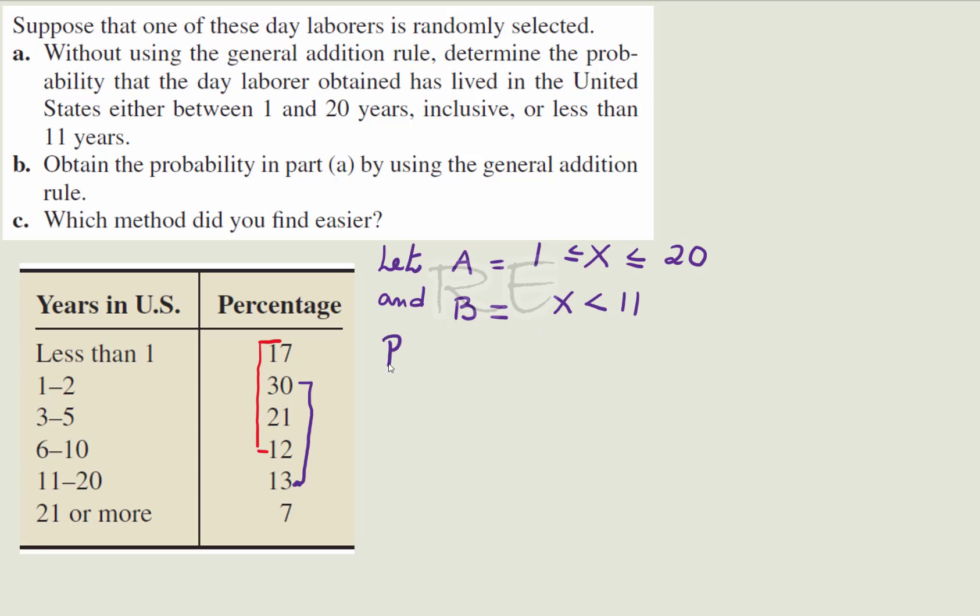Now, what we need to find is the probability of A or B. Without using the General Addition Rule, we will just add them up. So P of A or B will be equal to 17% plus 30% plus 21% plus 12% plus 13%. The answer is 93%.